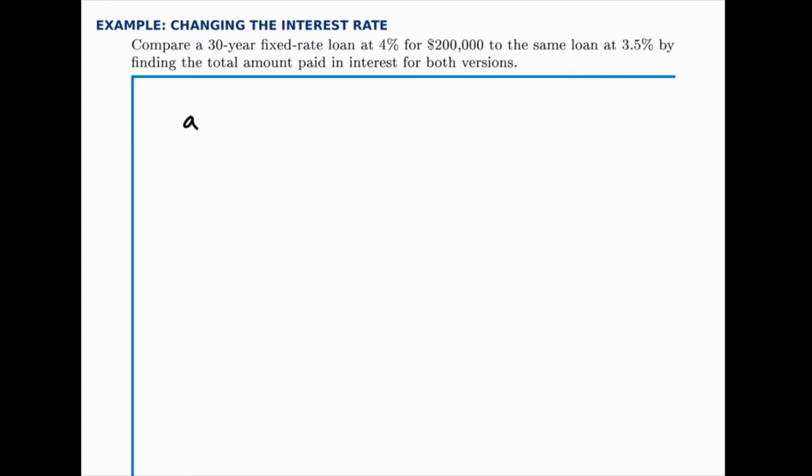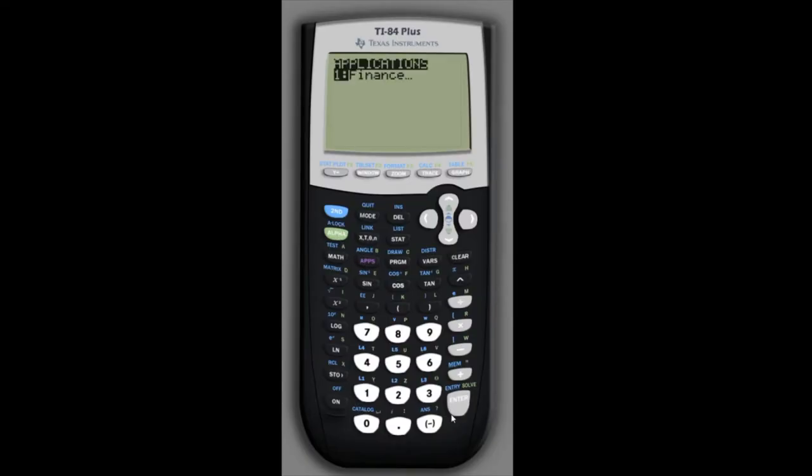For the first loan we have 4% interest, the second one we have 3.5% interest, and we're going to calculate the payment amount in both instances. To do this we'll actually use the TVM solver on the calculator. This is handy because all we're going to change from one to the other is the interest rate. N and the other pieces will stay consistent.